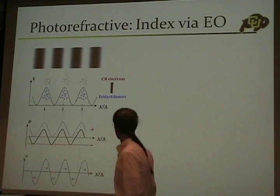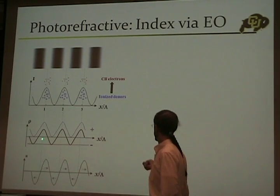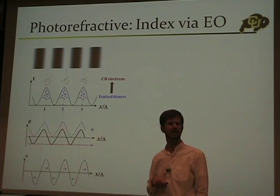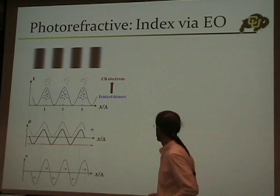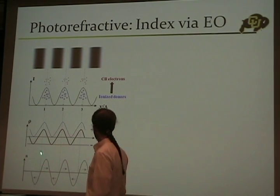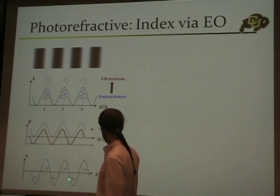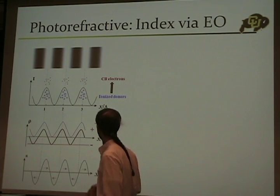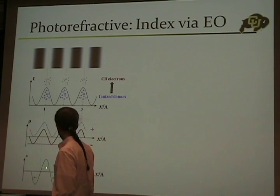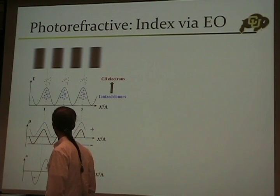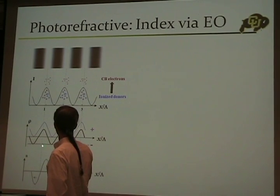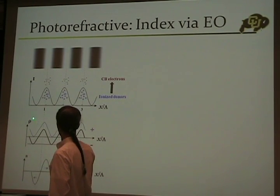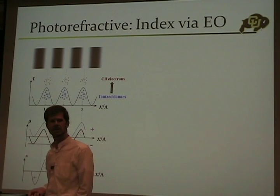Through the electro-optic effect, that charge distribution is going to generate electric fields, and those fields generate an index change. So I get a way to copy my intensity into an index change in these materials. In this particular case, there's a 90-degree phase shift between the intensity pattern and the index change. But the key idea is: I make something mobile, it moves, I end up with a charge density, and that charge density generates index.